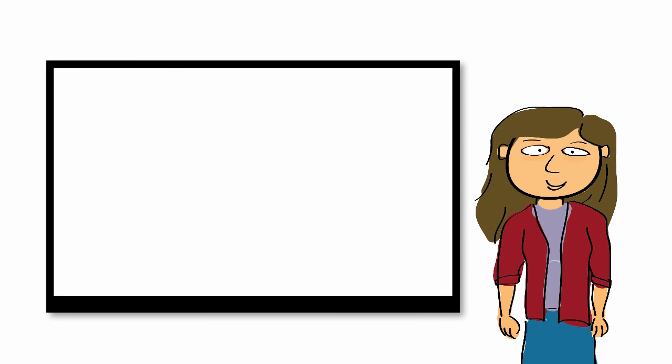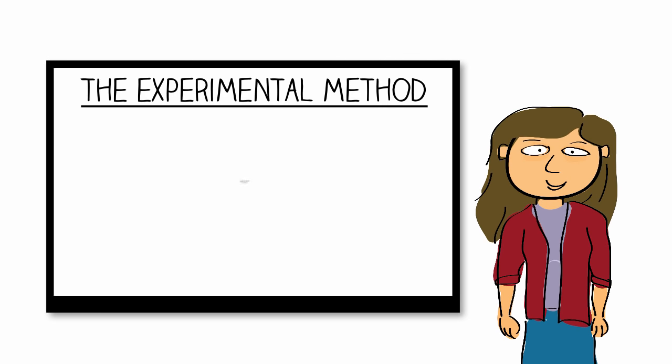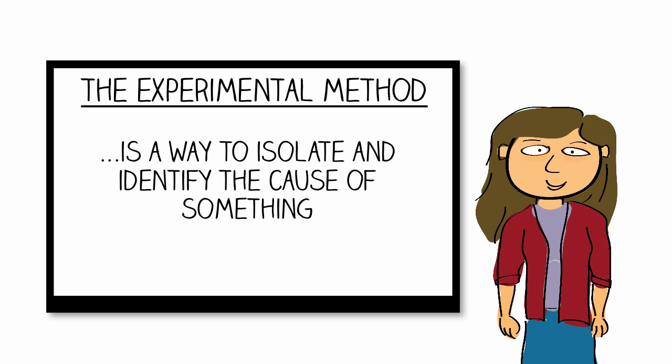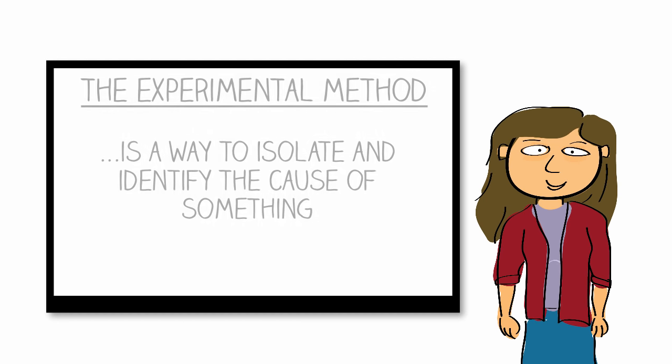Think of the experimental method as a way of isolating what is causing something to happen. Here's a simple example of isolating a cause.